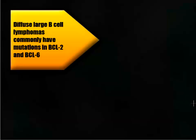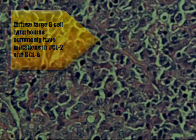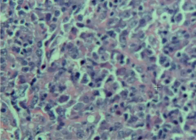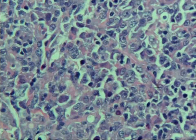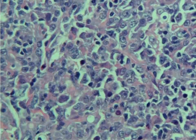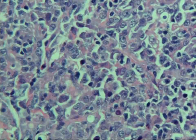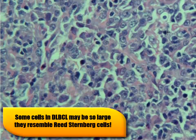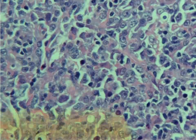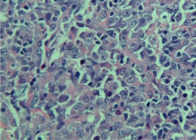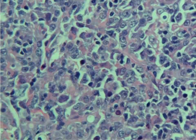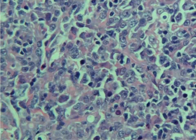Going down to higher power, we can see that these are very large lymphocytes. We assess this by comparing them to background lymphocytes — other lymphocytes that are normal. You'll notice that the large cells are about three to four times the size of the normal lymphocytes. This is pretty common for diffuse large B cell lymphoma, which is what we would call a large cell lymphoma.